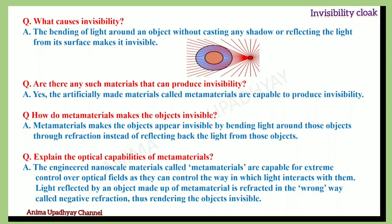How do metamaterials make objects invisible? Metamaterials make objects appear invisible by bending light around those objects through refraction instead of reflecting the light back from them. The engineered nanoscale materials called metamaterials are capable of extreme control over optical fields, as they can control the way in which light interacts with them. The light reflected by an object made of metamaterials is refracted in the wrong way — called negative refraction — thus rendering the objects invisible.